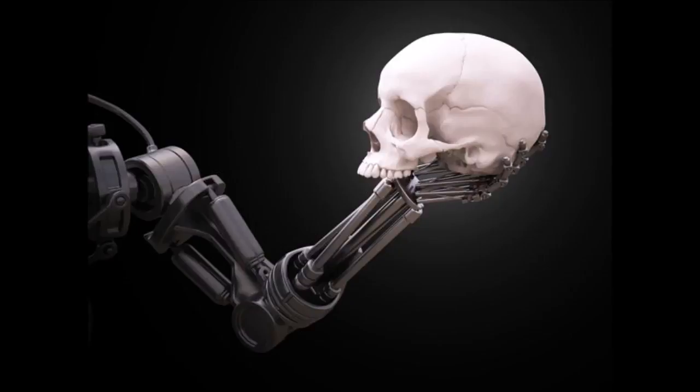Can you imagine what the lives would be like for the people you describe as the useless class, for the people who are left behind by the revolution? There are many different possibilities and scenarios. What we need to realize is that technology is never deterministic. The same technology can be used to create very different kinds of societies. So like in the 20th century, you could use the technology of the Industrial Revolution to create a communist dictatorship or a fascist regime or a liberal democracy.